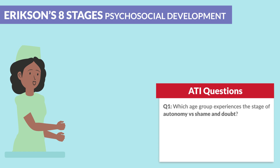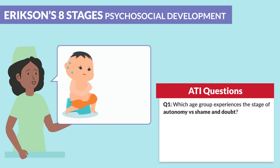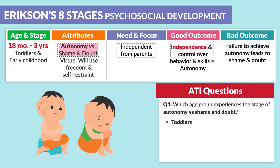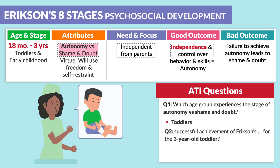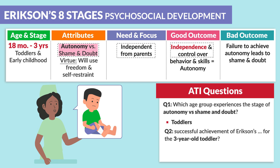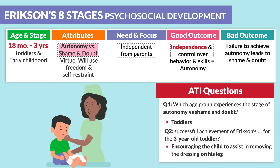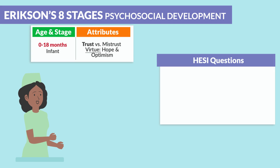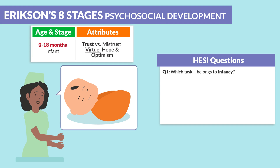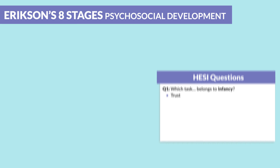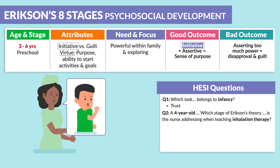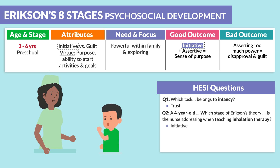ATI mentions: which age group experiences the stage of autonomy versus shame and doubt? The toddlers. A second question: successful achievement of Erikson's for a three-year-old toddler — encourage the child to assist in removing the dressing on his leg. A good outcome is initiative with preschoolers, so encouraging the child to remove the dressing shows initiative. Hesse mentions: which task belongs to infancy? Trust. And for a four-year-old, which stage of Erikson's theory is the nurse addressing when teaching inhalation therapy? This is initiative.